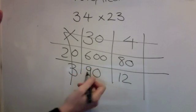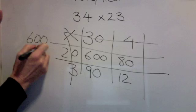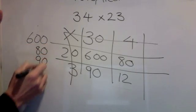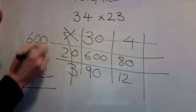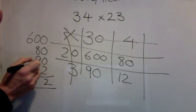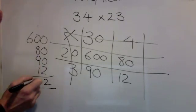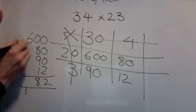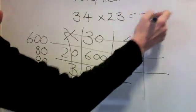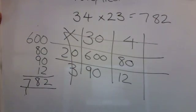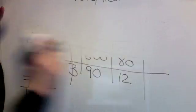Add these together. 600, 80, 90 and 12. 2 add nothing is 2. 9, 10, 18. One on the doorstep. 6, let him in, is 7. 782.